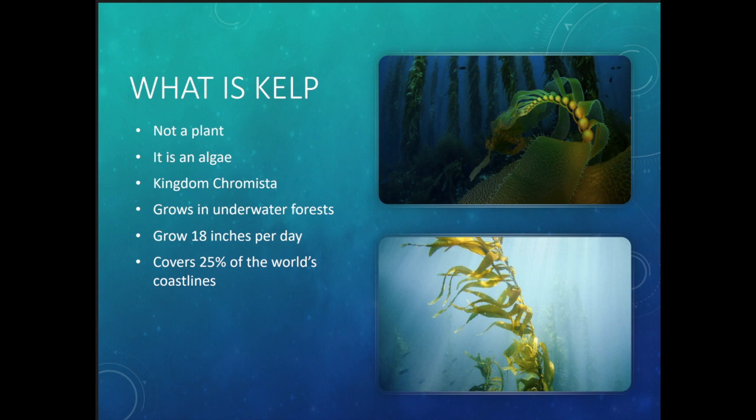A lot of you are answering 'plant,' but it's actually not a plant — it's an algae. Kelp is in the kingdom Chromista. I actually had no idea that kingdom even existed until I started looking into this lesson. It's plant-like, but it's actually an algae, very similar to the zooxanthellae in coral that we talked about. Kelp is not a plant, not an animal, not a tree — it's an algae, which is in a completely different kingdom.